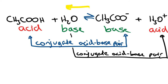So we've gone through the theory of acids and bases. The main things to take away: acids are proton donors, bases are proton acceptors. Strong acids fully dissociate and give away all their protons, while weak acids only partially dissociate and don't give away all their protons.